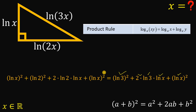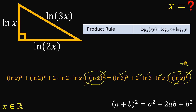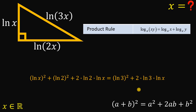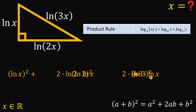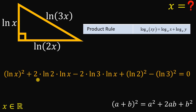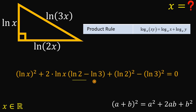Now let's simplify this equation. Notice that (ln x)² appears as a positive term on both sides, so we can cancel it out by subtracting (ln x)² from both sides. We then focus on the remaining equation, and notice there is a common factor of 2·ln x in the middle terms. Factoring that out gives 2·ln x·(ln 2 − ln 3).